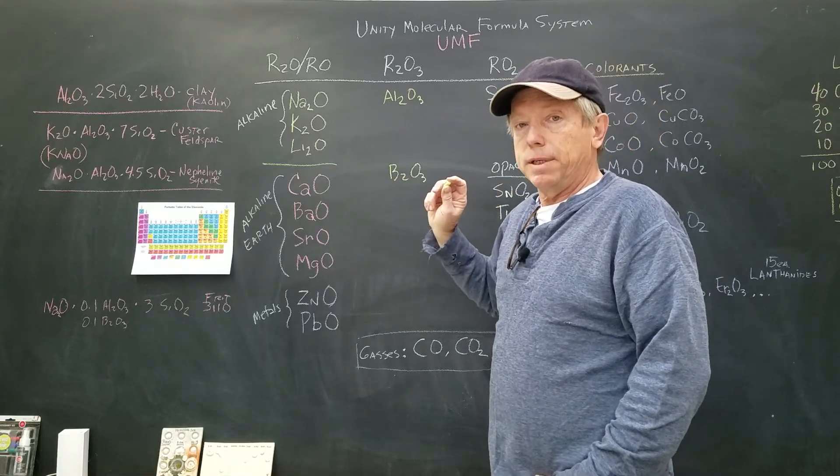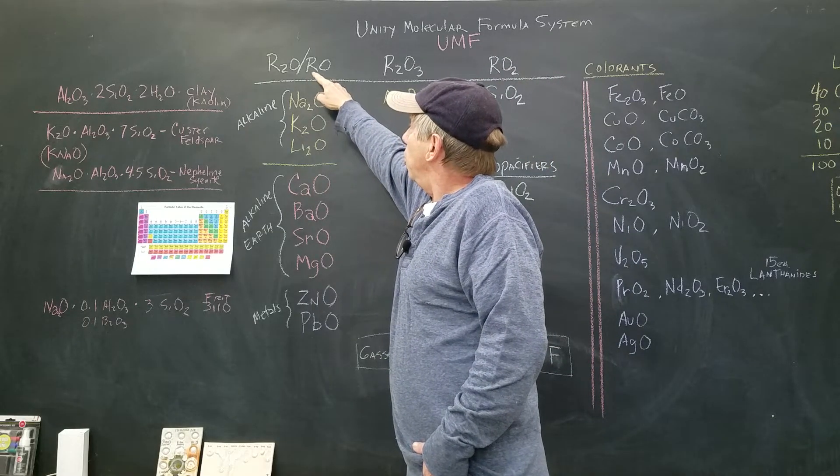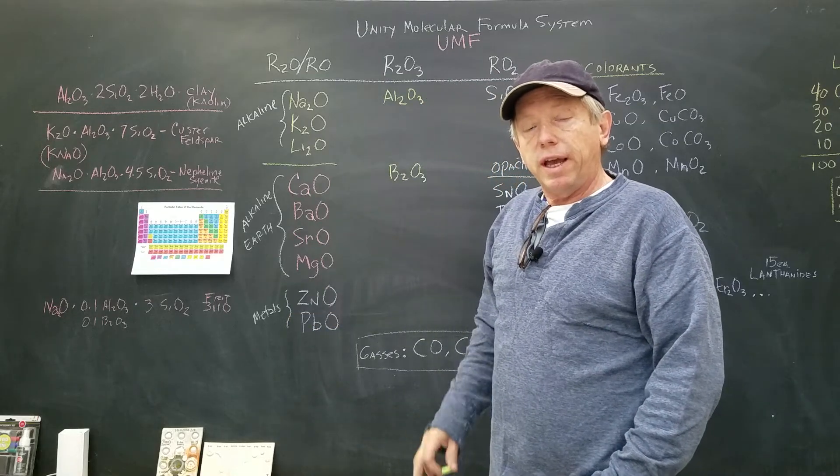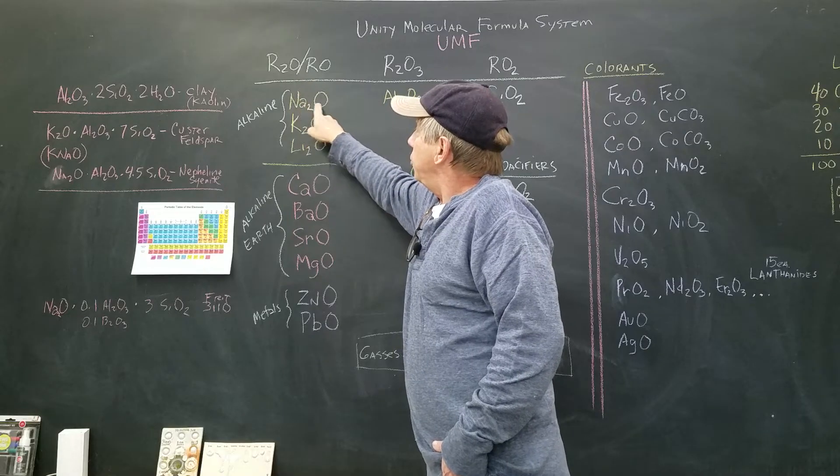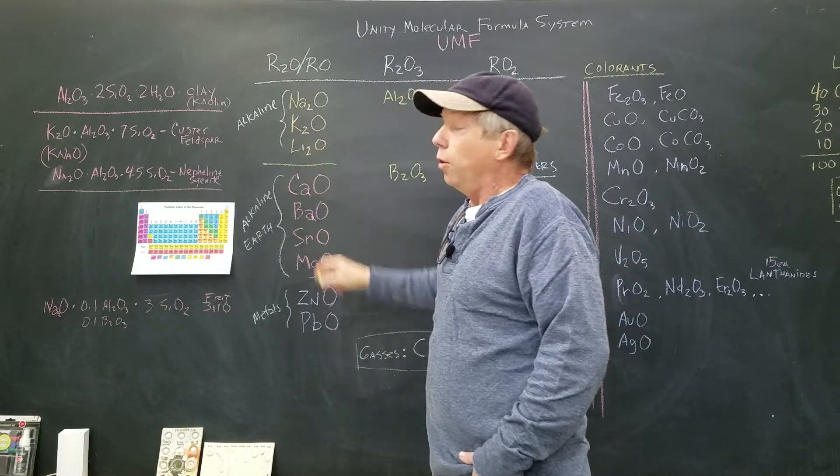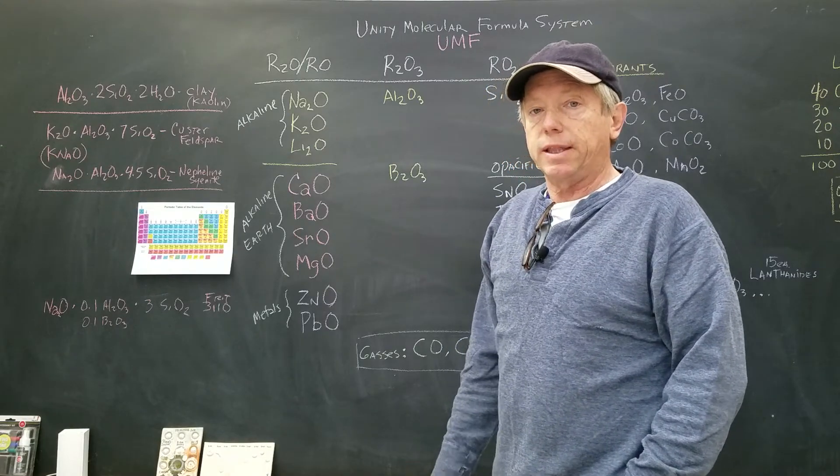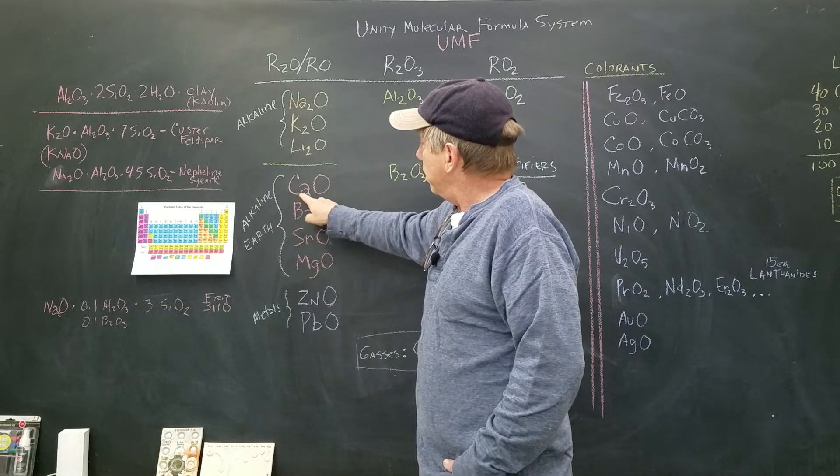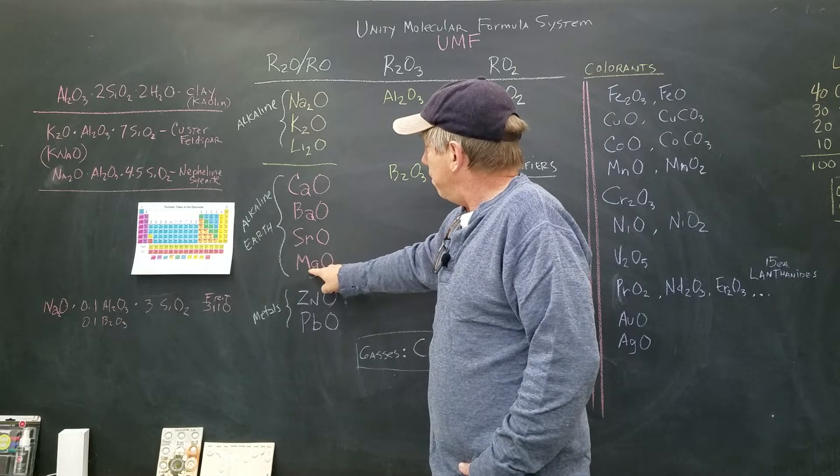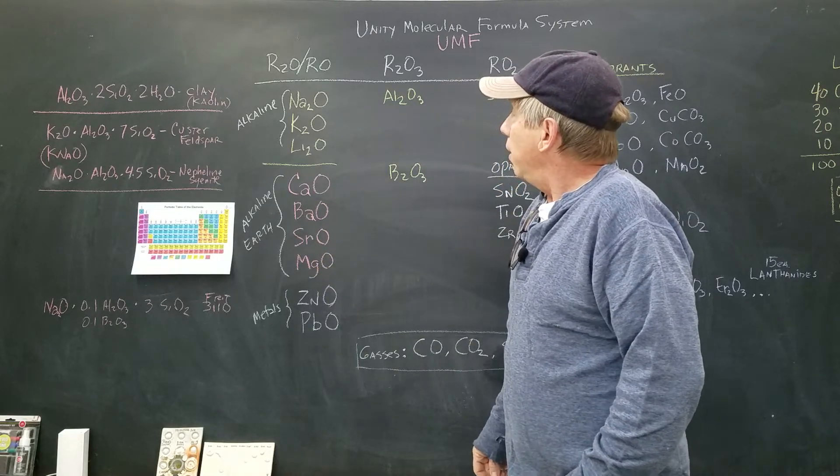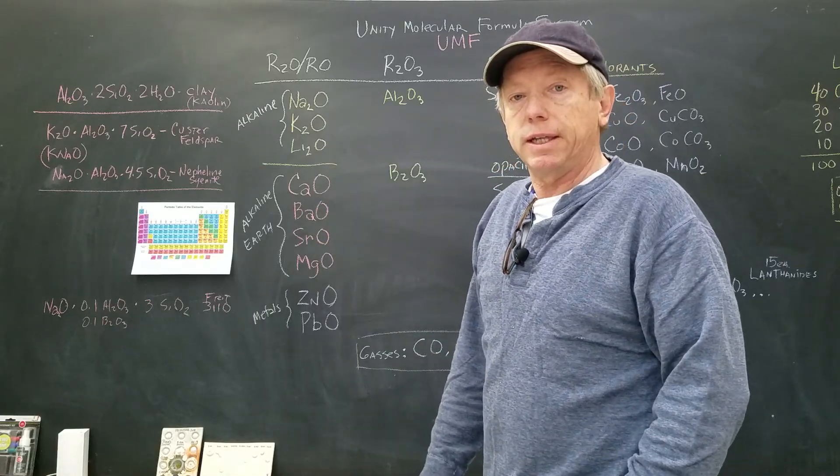Let me tell you this: this is the R2O, RO column. R is a variable meaning any element. So R2O: Na2O, K2O, Li2O—anytime you see that structure, you'll think it's a flux. If it's an RO, that's CaO, BaO, SrO, MgO—those are all in the RO area. Anytime you see that structure, you're going to predict that it's a flux.